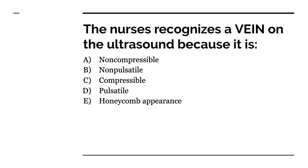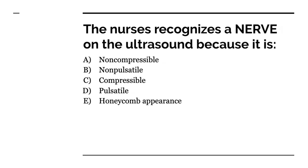The nurse recognizes a vein on the ultrasound because — non-compressible, non-pulsatile, compressible, pulsatile, or honeycomb appearance. The answer is B and C — non-pulsatile and compressible. And what about nerves? Nerves are A, B, and E — non-compressible, non-pulsatile, and honeycomb in appearance.